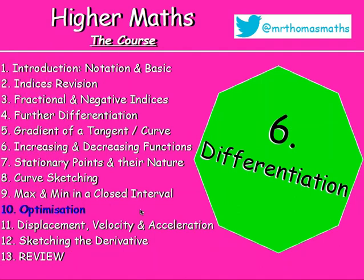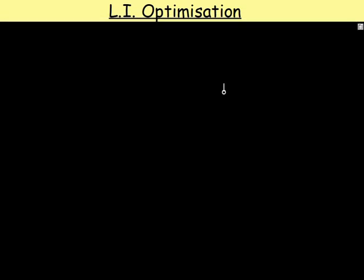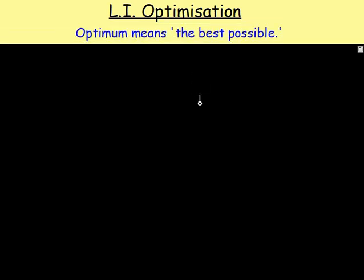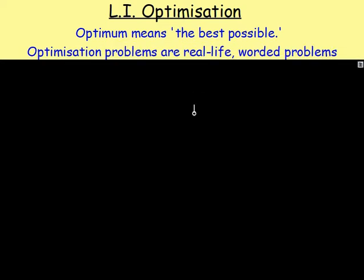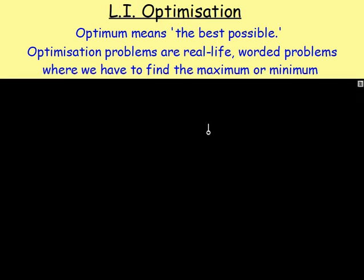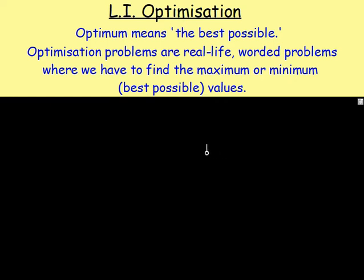If you are learning about optimization for the first time, then obviously you'll want a bit more. So what is optimization all about? The word optimum means 'the best possible,' so optimization problems are real-life worded problems where you have to find the maximum or minimum — in other words, the best possible values.